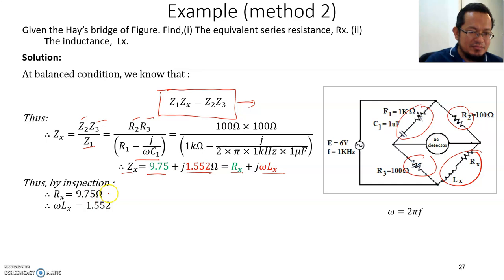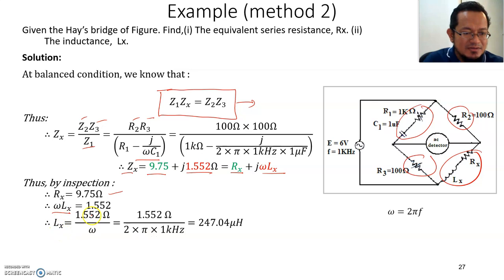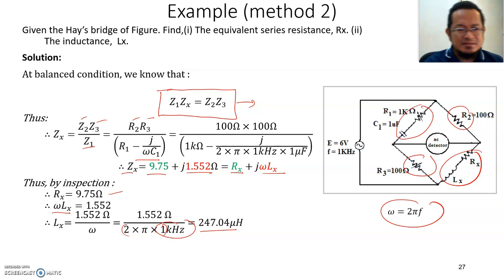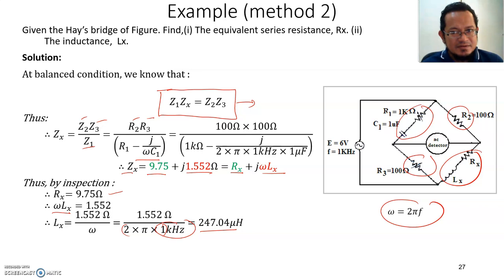Zx is a complex number with a real part and an imaginary part. By inspection, the resistance Rx is 9.75 Ω and ωLx is 1.522, so Lx equals 1.522 divided by ω, where ω equals 2πf and equals 1000 radians per second. This gives Lx equal to 247 microhenries — the same answer as Method one. That concludes Hay's Bridge; we will continue next with Schering Bridge.